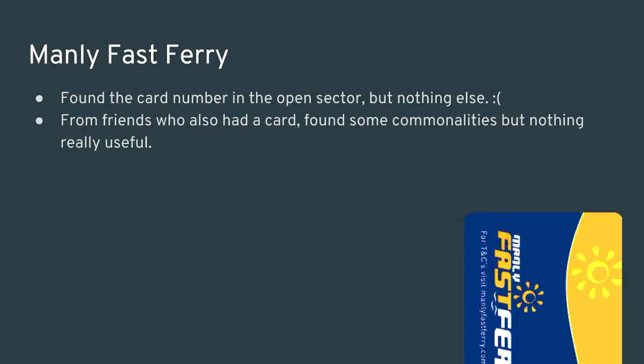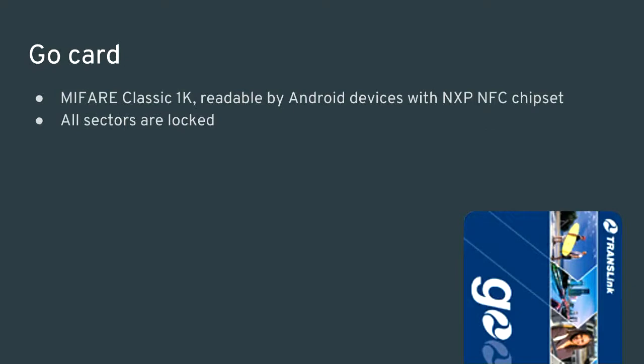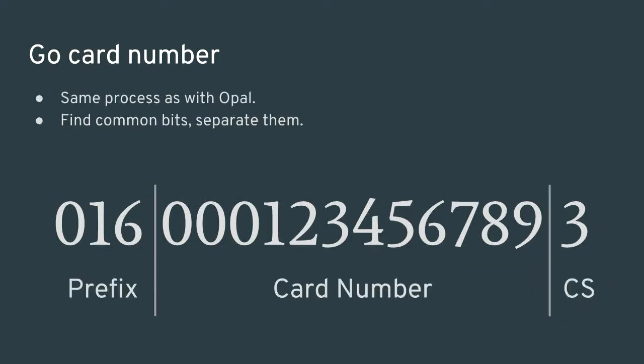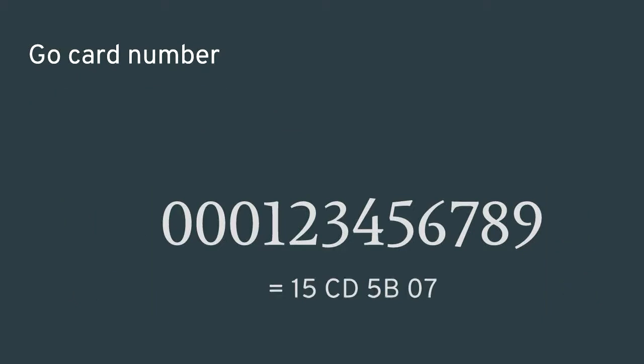I found my card number in the open sector but nothing else. I compared it with friends' cards with the same problems — none of the useful data was readable. This was frustrating, so I decided to look at something else and come back to this card later. I also had a Go card from a trip to Brisbane for Linux.conf.au 2011. Like the Manly Fast Ferry card, it uses a MIFARE Classic 1K, but all sectors are locked. Nothing is readable except the MIFARE serial number.